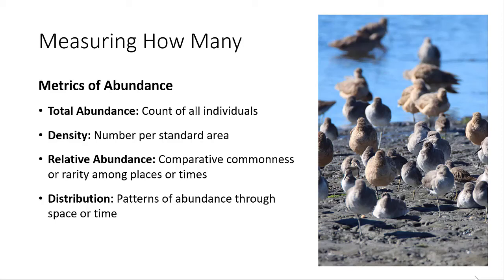Rather than total abundance, most ornithologists and ecologists aspire to a value called density — the number per some standard unit of area, such as birds per hectare, per square kilometer, or even per square meter. That's really handy because if we have an estimate of density, we can estimate total abundance for a given area. The trick is getting the density values, which means we need very good counts of birds over a known area. With repeated sampling, this is doable, and most studies aspire to have actual density measurements.